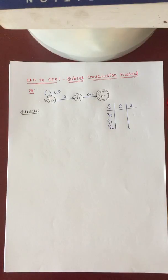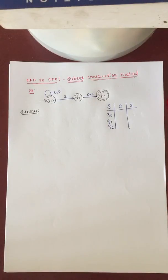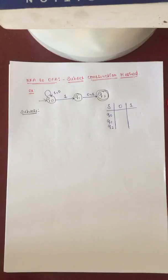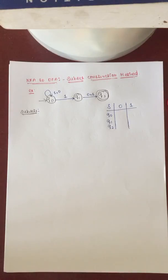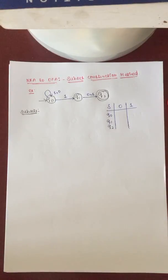Hello everyone. In this video I am going to discuss NFA to DFA conversion using the subset construction method. Why should we go for this conversion from NFA to DFA? Because both are falling under finite automata only. To prove that NFA and DFA are equivalent, we are going for this method. Every language that can be described by some NFA can also be described by some DFA.